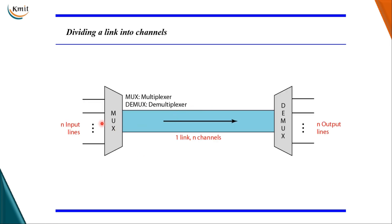You can see in this diagram that n lines are sharing the bandwidth of a single link for transmission. There are n input lines where n inputs are given to a multiplexer. A multiplexer does many-to-one transmission — it combines the n input lines into a single stream. This single stream is fed to a demultiplexer, which takes back the component transmissions from that single transmission and gives them to the n output lines.